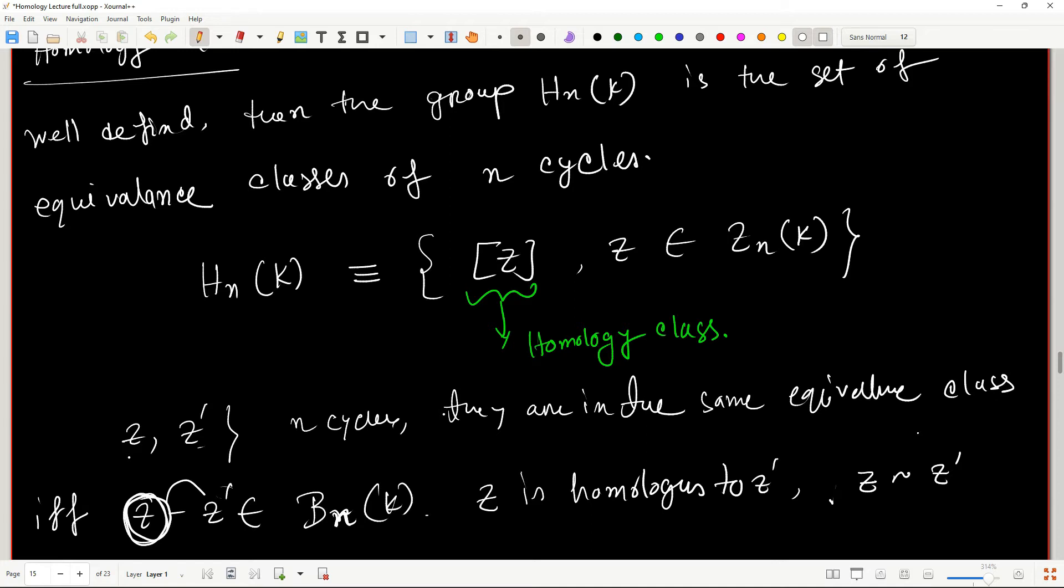And this Z minus Z prime is also a boundary of some space. Then by definition, any boundary, let's say some small b, is homologous to the identity element as well.